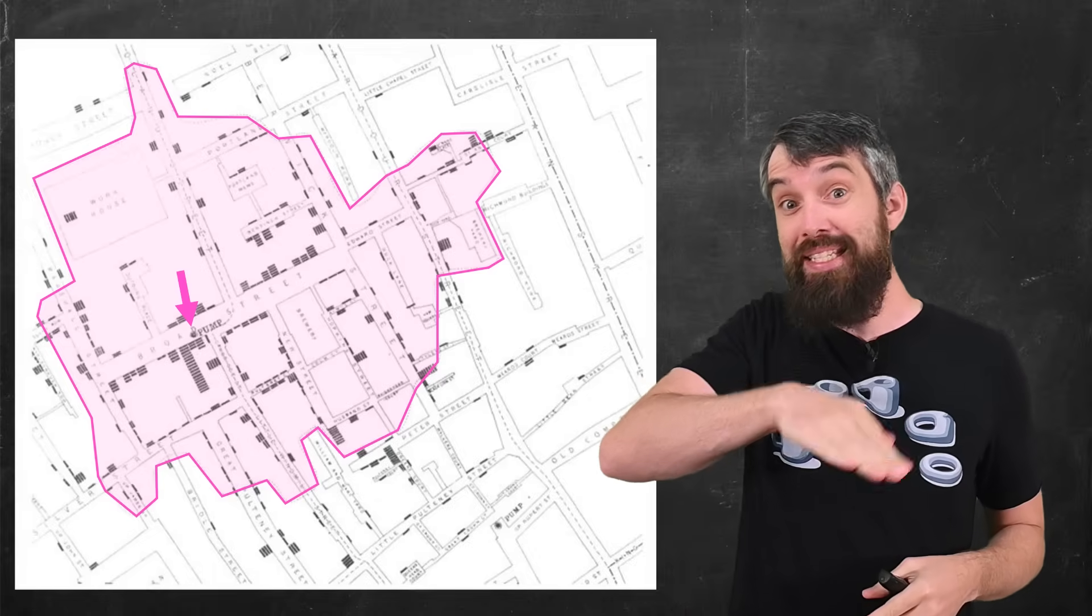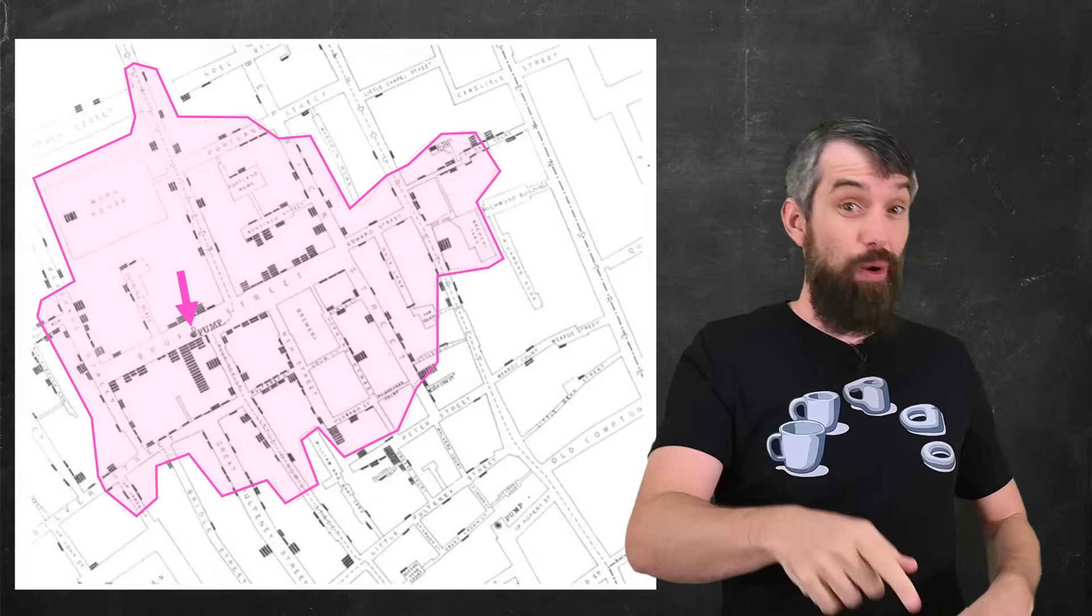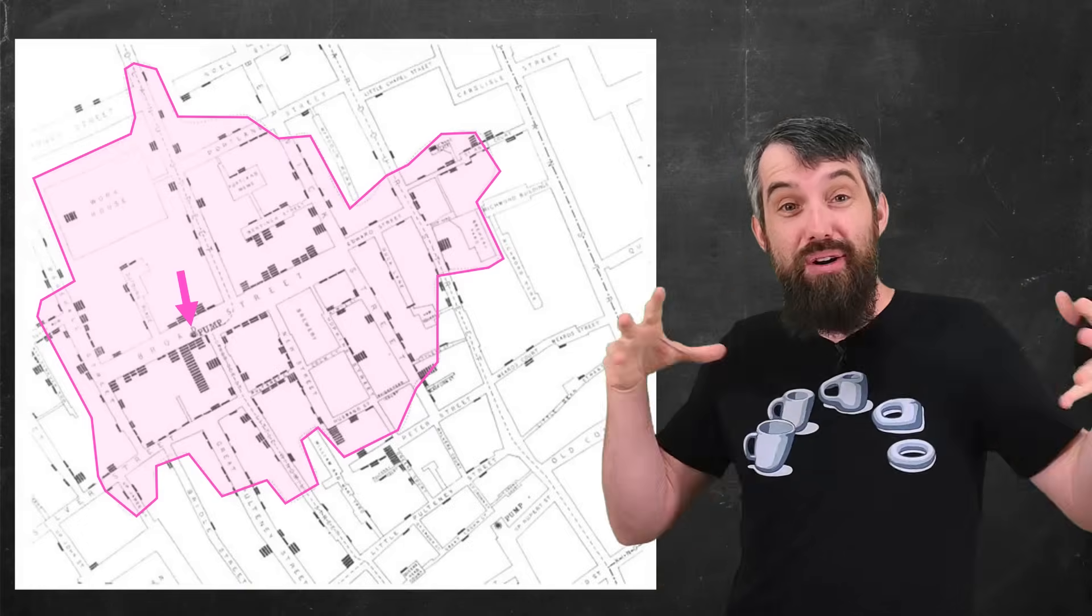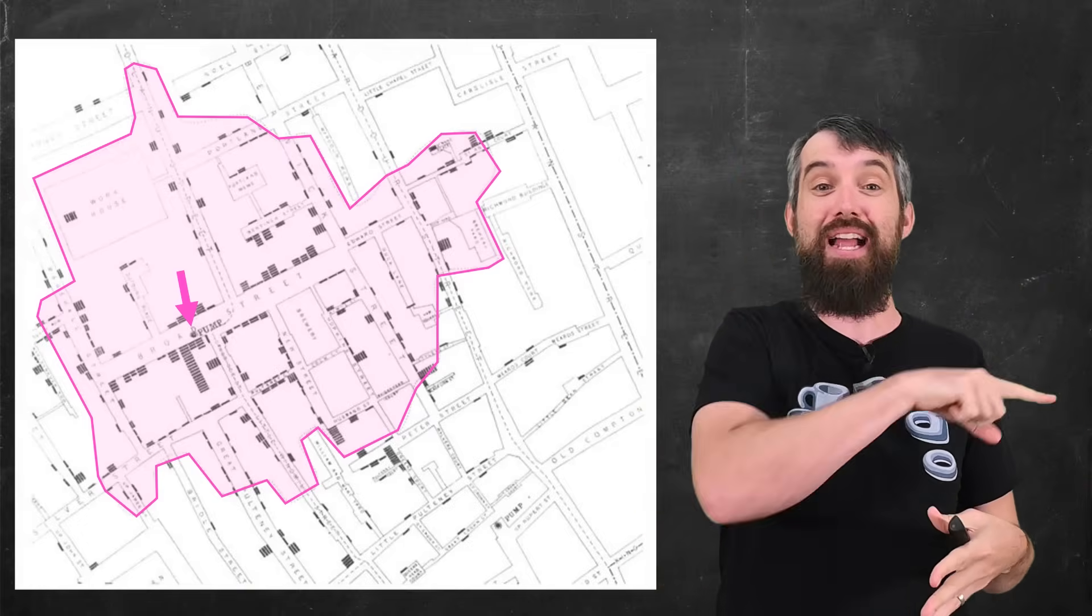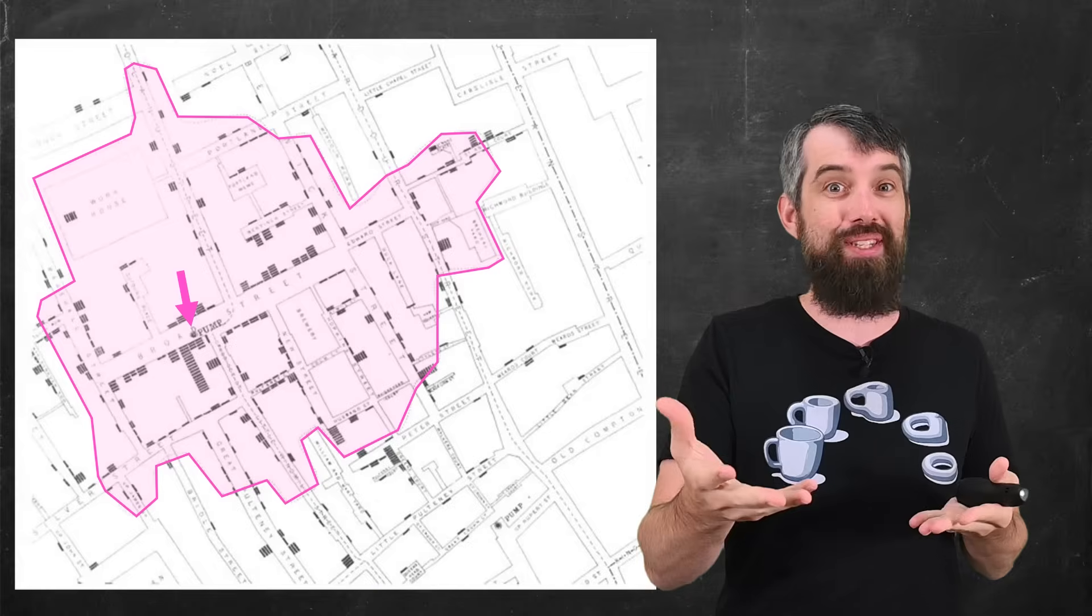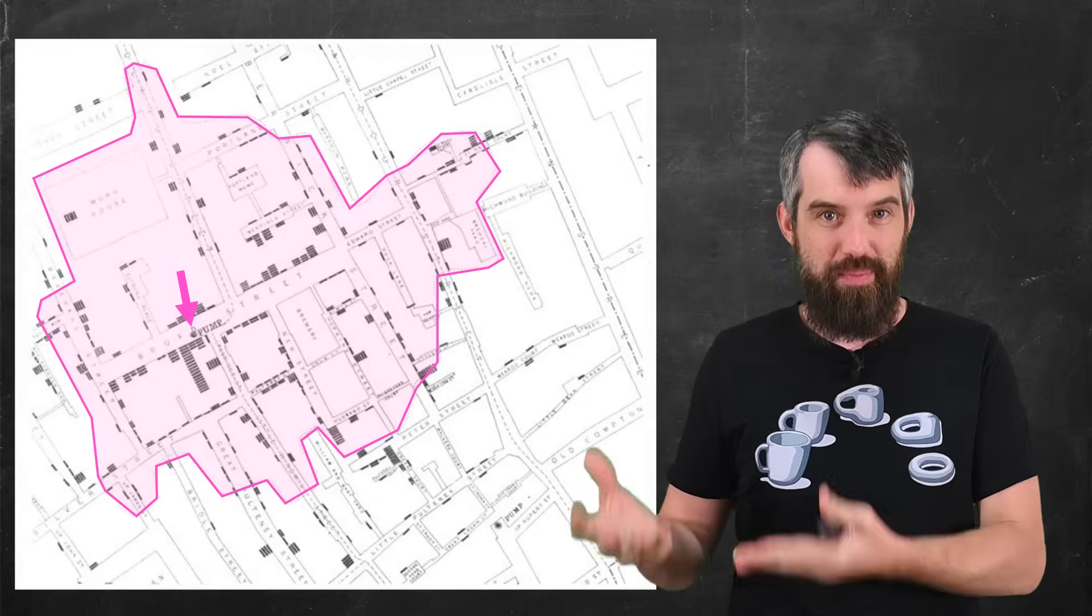And then you'll notice in the map, there's all these stacked lines. Those stacked lines represented deaths to cholera. And you'll notice how those are largely constrained within that geographic area. And so Jon Snow used this evidence to help support the theory that cholera was a waterborne transmission.